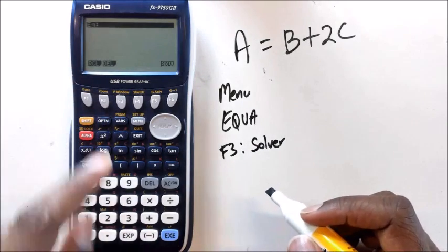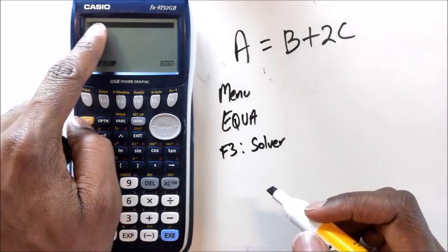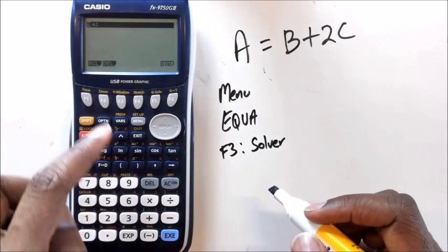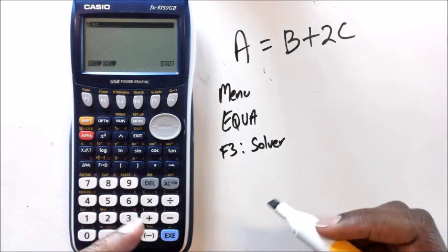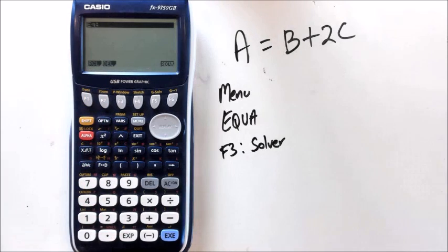Okay, so at this point it should say something like Equation and just have nothing in there. If it has something in it, you can press Delete and just delete the formula. Now I'm going to show you how to write this A equals B plus 2C equation into your calculator.